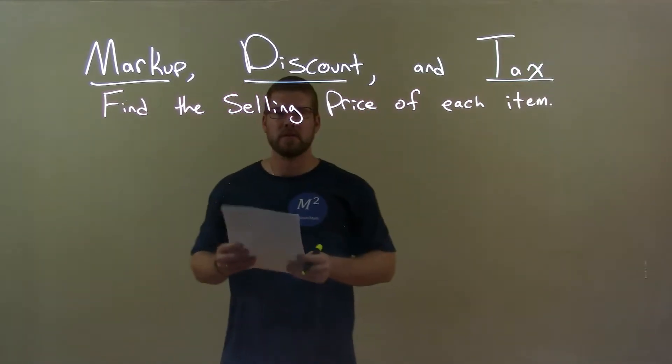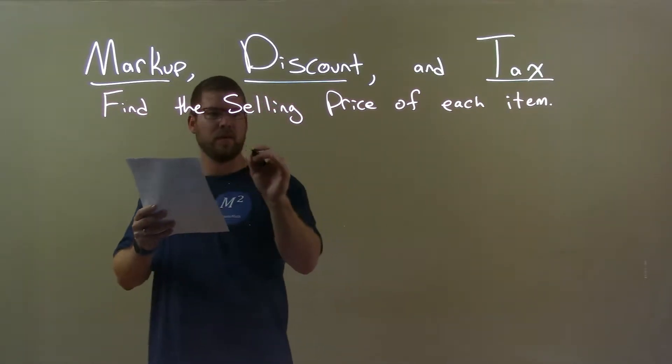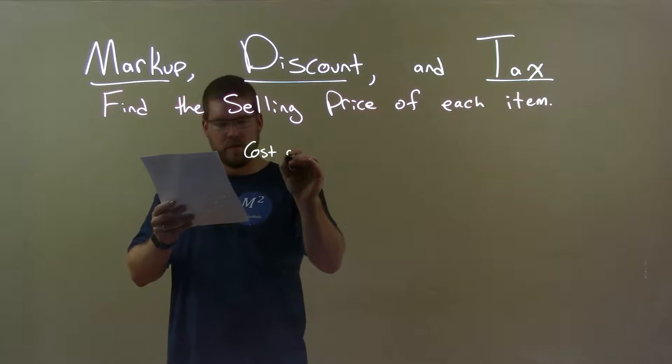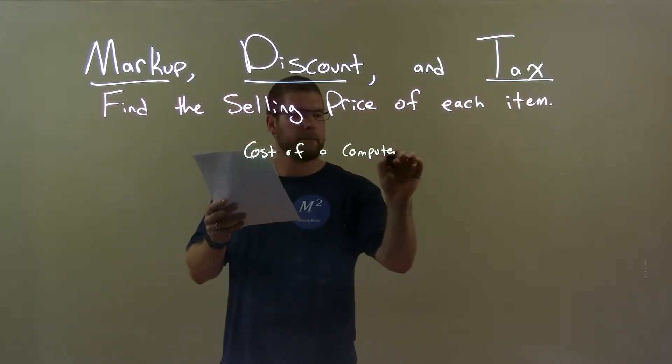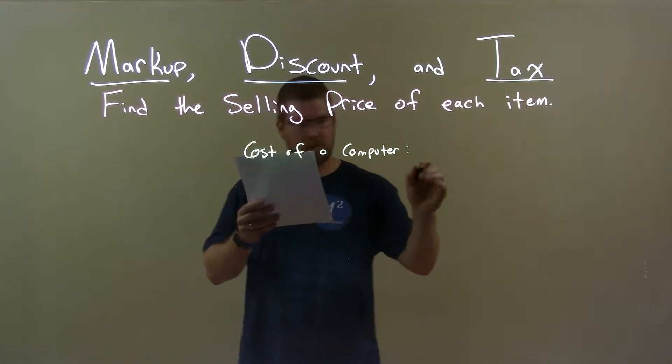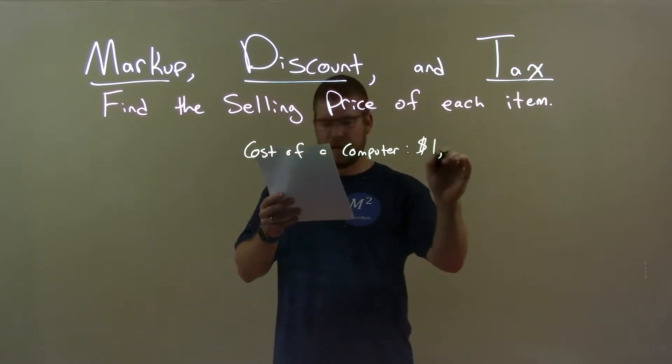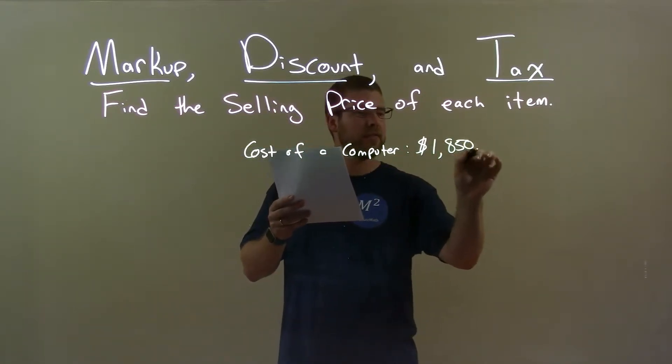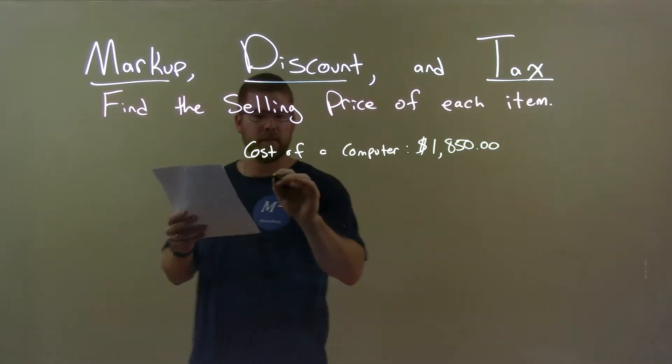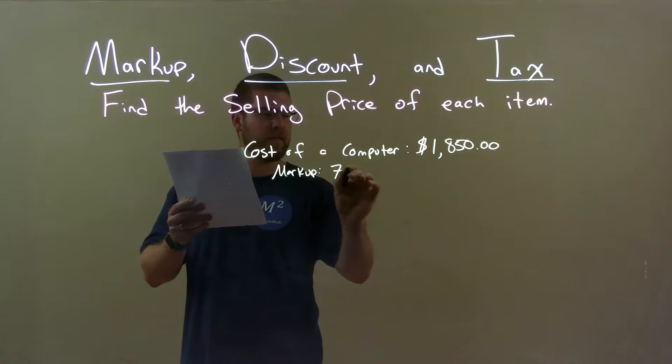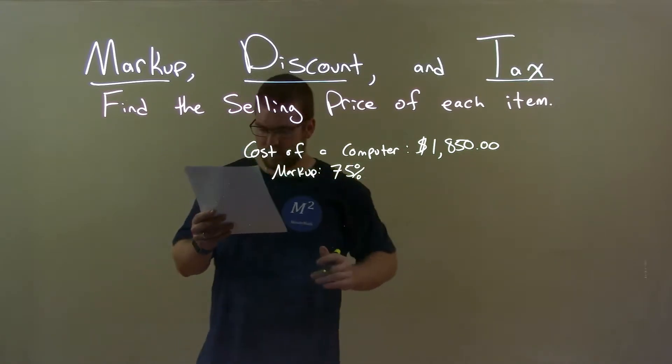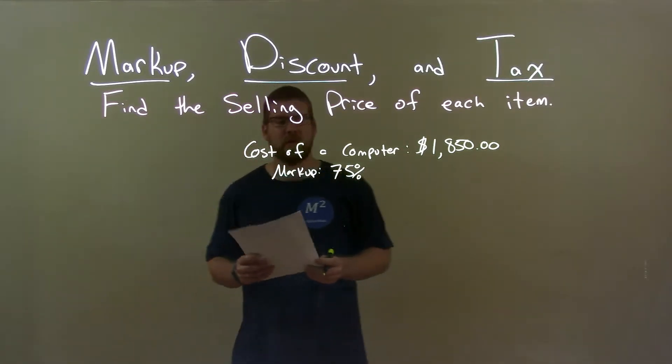We're finding the selling price of each item. So if I was given this item, the cost of a computer is $1,850 but its markup is 75%. We got a 75% markup here, alright? Well,